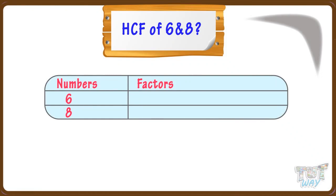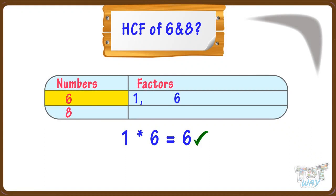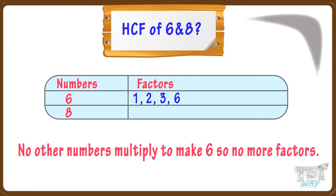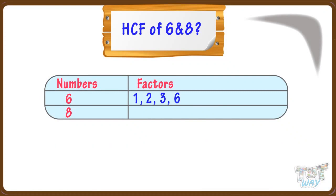Let's first find the factors of 6. 1 × 6 = 6, so 1 and 6 are factors of 6. 2 × 3 = 6, so 2 and 3 are factors of 6. No other numbers multiply to make 6, so no more factors. Factors of 6 are 1, 2, 3, and 6.